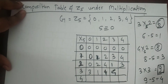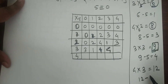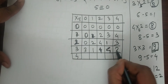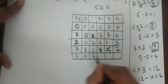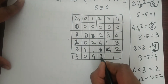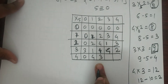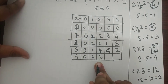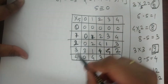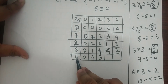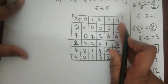For the ×4 column: 0×4=0, 1×4=4, 2×4=8 — dividing 8 by 5 gives remainder 3. 3×4=12, so 12 minus 10 is 2. We always obtain the remainder by dividing by 5.